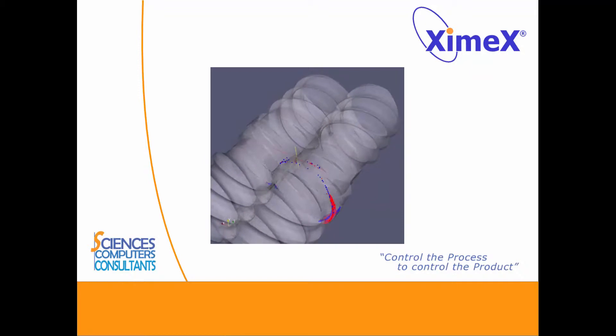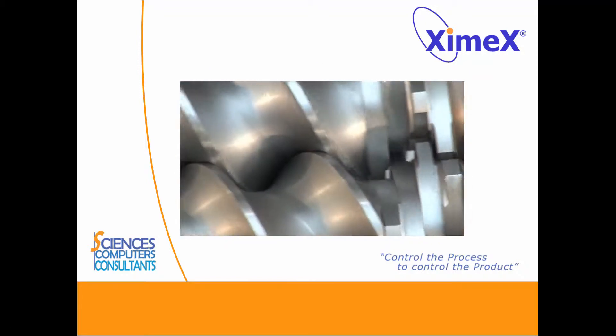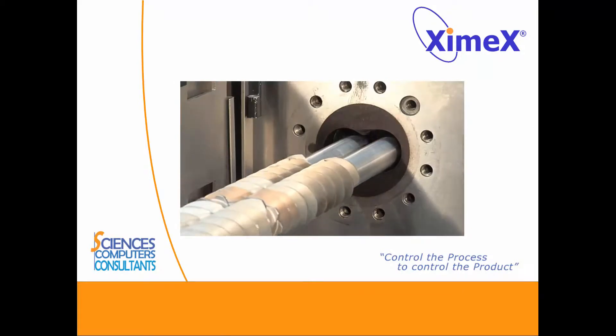Co-rotating twin screw extruders are mostly used in compounding and realization of complex blends and technical materials.